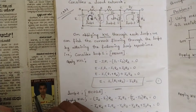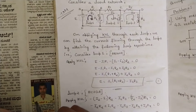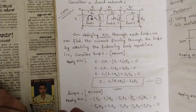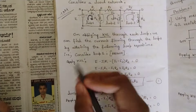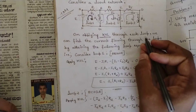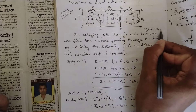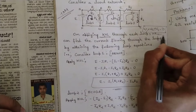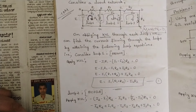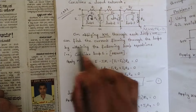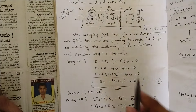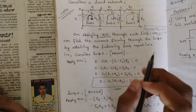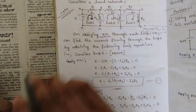We should know the concept of KVL in this case. KVL — Kirchhoff's Voltage Law — which you have already studied: it states that the sum of all voltages in a loop is equal to zero. For example, if we have three voltages, V1 + V2 + V3 = 0. By applying KVL through each loop we can find the current flowing through the loops by writing the loop equations. Our goal is to find the current through each loop.